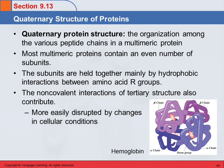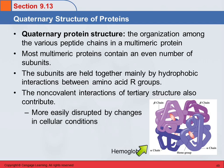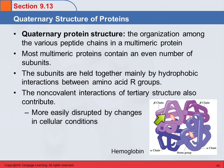Here's an example. This is hemoglobin. Hemoglobin has four chains: two alpha chains and two beta chains. And it also has heme groups, which makes it a conjugated protein.